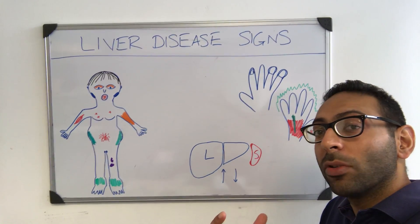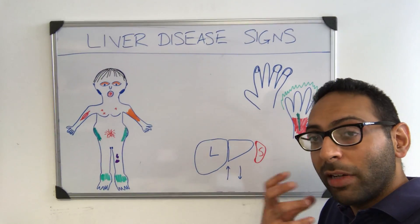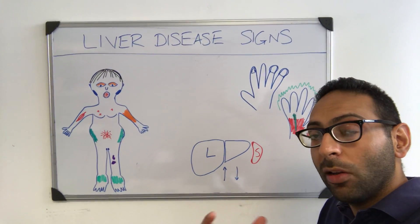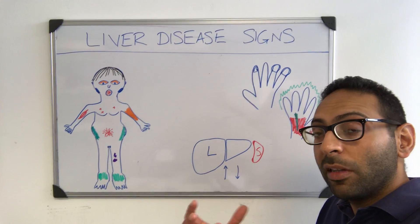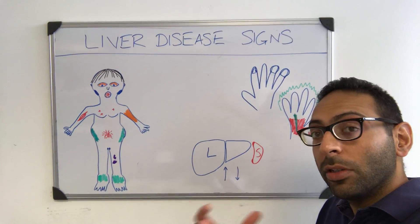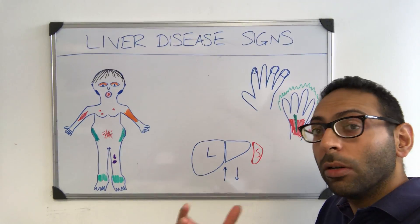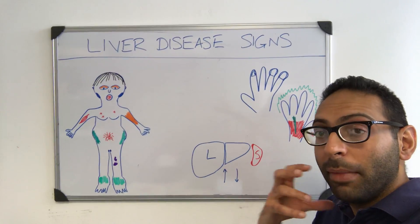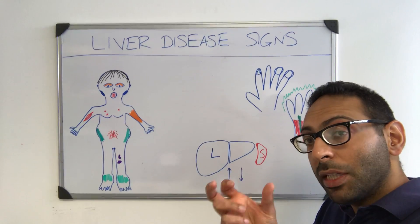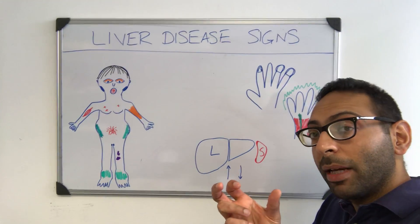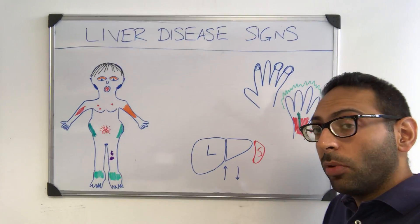Let's recap signs or stigmata of chronic liver disease. Remember there are lots of causes of chronic liver disease, whether it be infection, whether it be alcohol, whether it be medications, but there are some key signs to remember that may occur across the board.